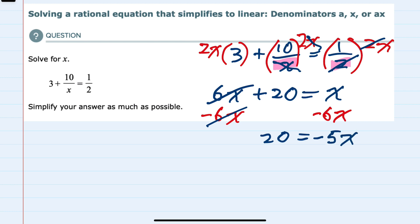And we can finish solving for X by dividing both sides by negative 5. This isolates that X on the right-hand side of the equation. And on the left-hand side, we have negative 4. So we've solved for X by first getting rid of all of the fractions.